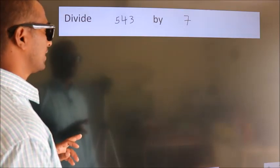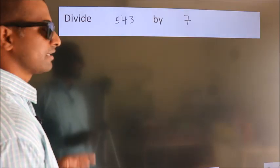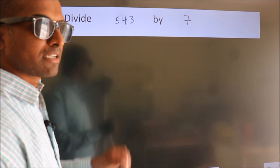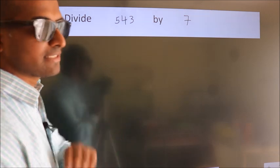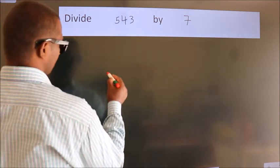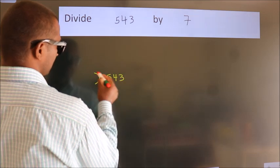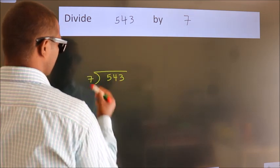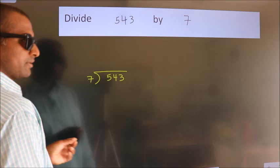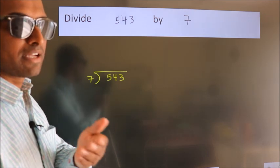Divide 543 by 7. To do this division, we should frame it in this way: 543 here, 7 here. This is step 1. Next.